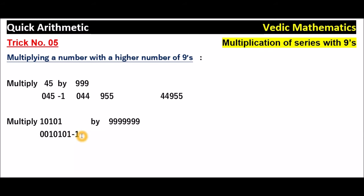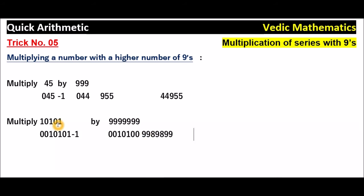0,010,101 minus 1 equals 0,010,100. Now subtract 0,010,100 from 9,999,999 to get the second part: 9,989,899. So 10,101 × 9,999,999 equals 0,010,100 | 9,989,899, giving the answer 101,009,989,899.